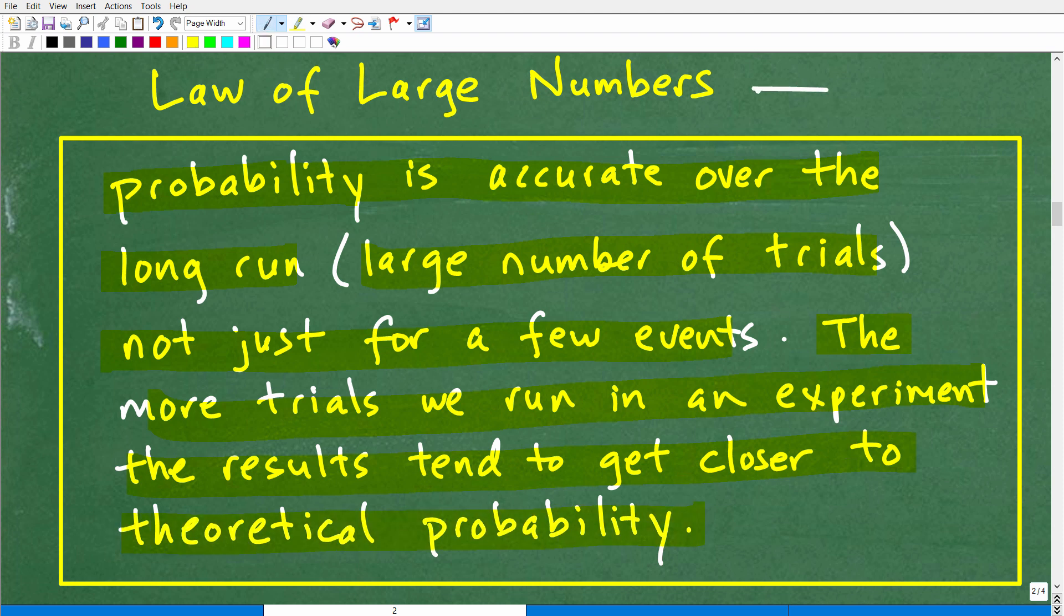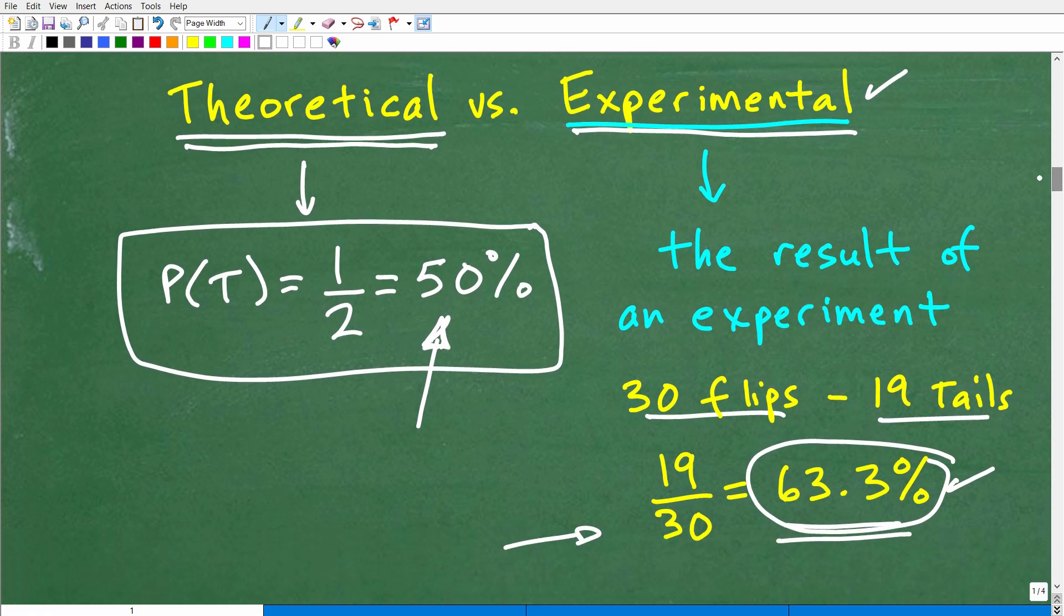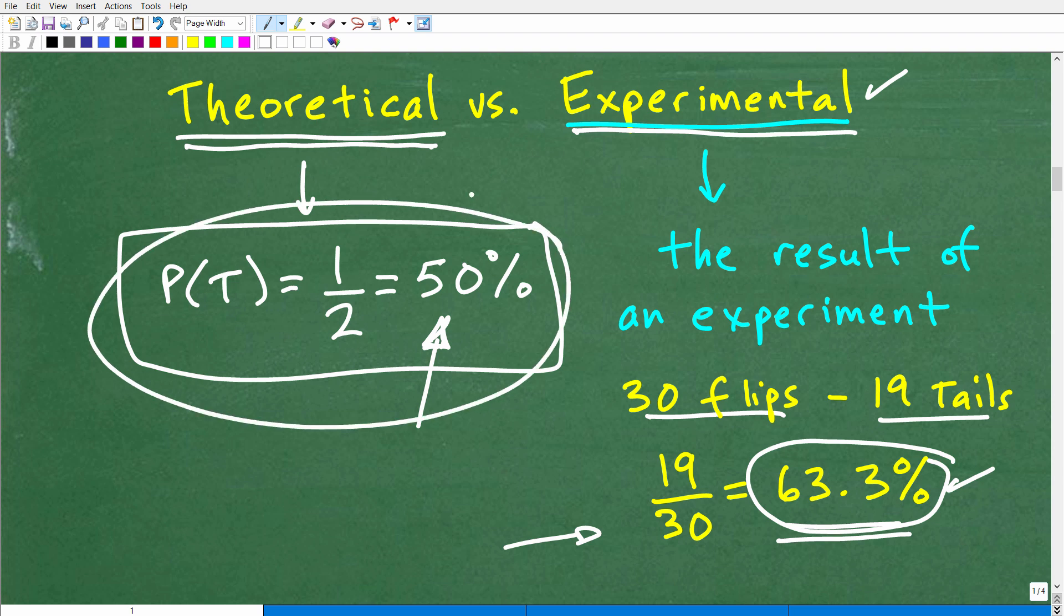This is the key concept you need to know, the law of large numbers. So let's go back to this little deal right here, this experiment, okay? So we have this theoretical probability that, hey, 50% of the time we are going to get tails. Well, we do an experiment for 30 flips, and we only got tails 63.3% of the time. Or we got tails 63.3% of the time. Well, guess what?